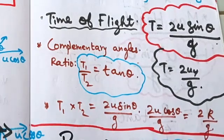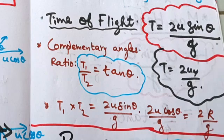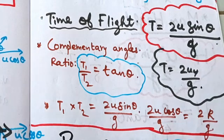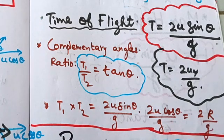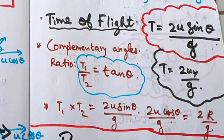What is the time of flight? The time of flight is the time to return to the same plane. Time of flight T is equal to 2u sin theta by g. That is, T equals 2u_y by g.